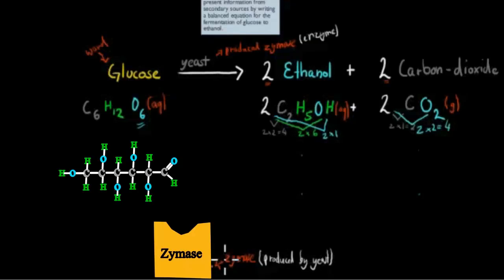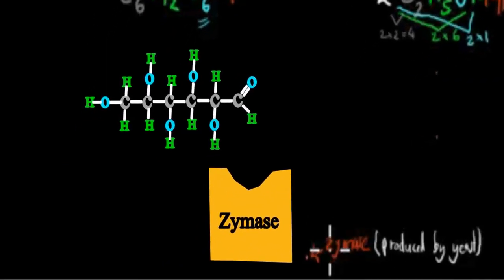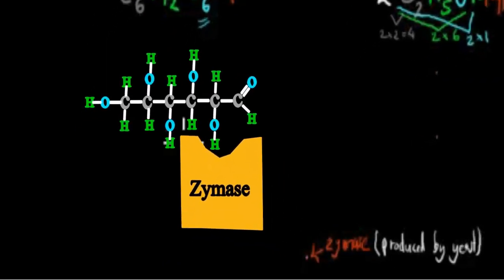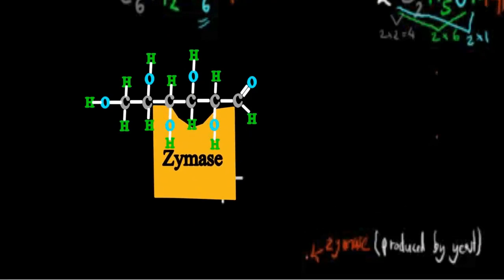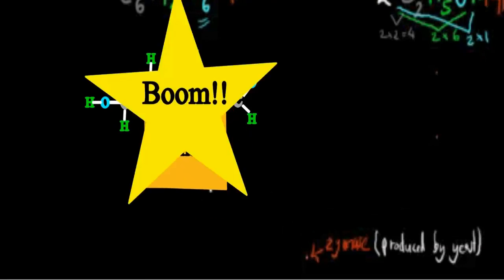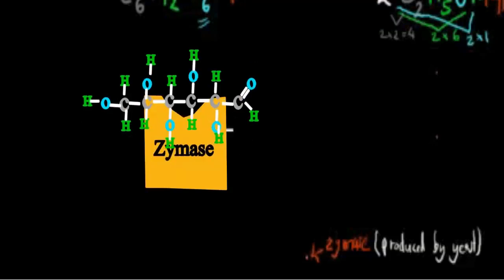What will happen is, at some point, this enzyme will actually travel towards the glucose, or they meet, and when they meet, there's going to be a big reaction, because this enzyme Zymase starts to break down this glucose structure.